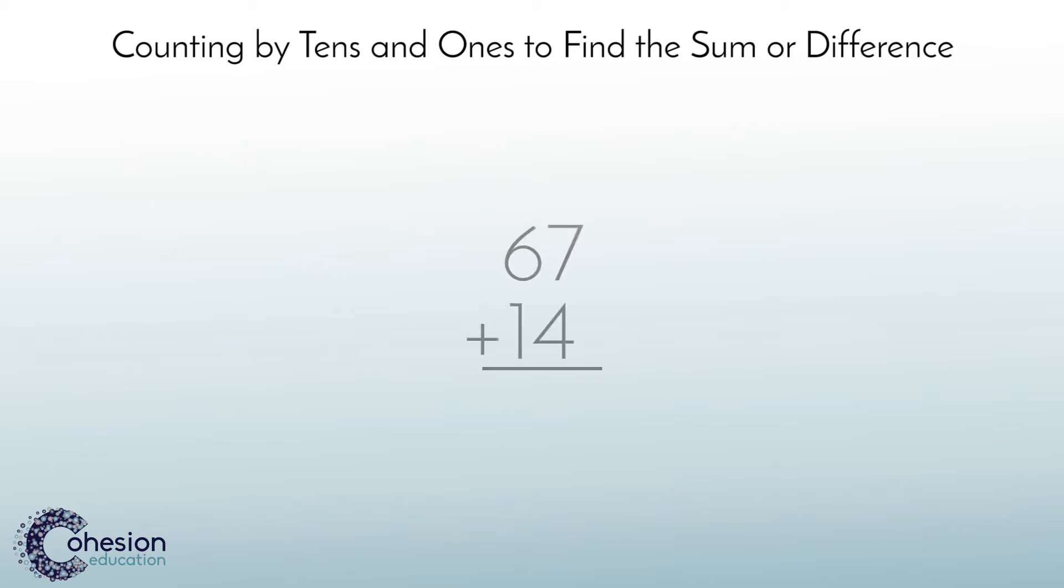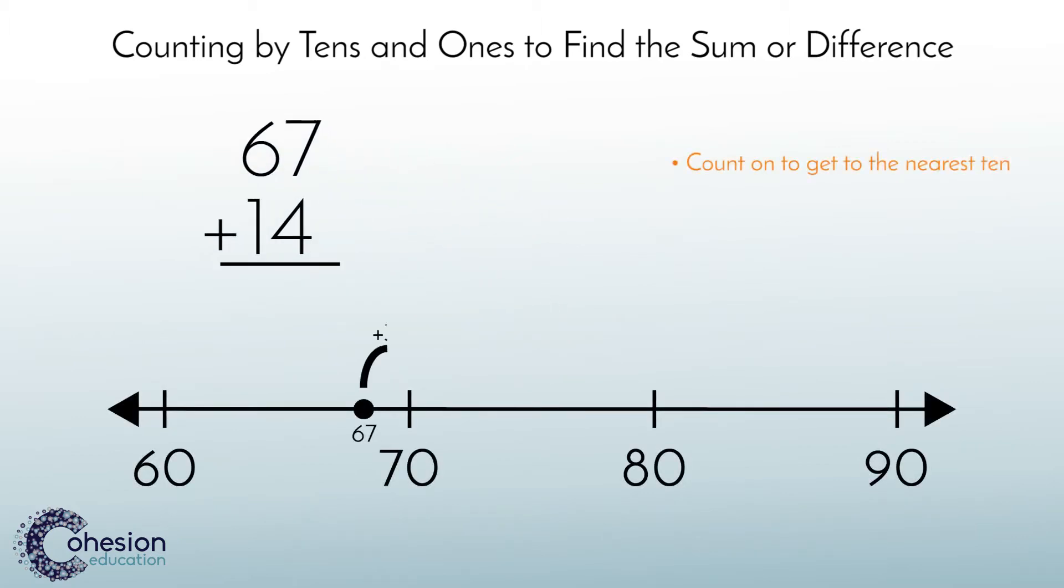For example, when adding 67 plus 14, students would count on to get to the nearest 10, which is 70. Next, count on 10 more to get to 80, and then count on 1 more, which is the amount left over from the 14, to get the answer 81.